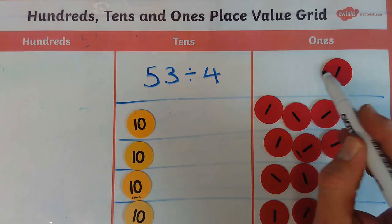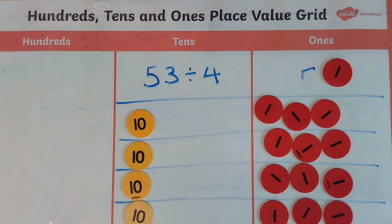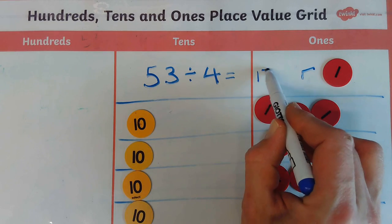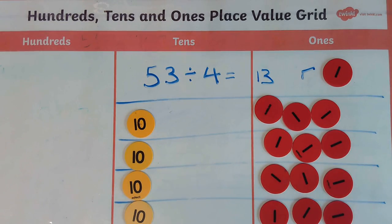And we can see here I've got 10, 11, 12, 13. So I know my answer is 13 and I know I've got a remainder of 1.